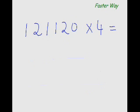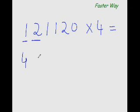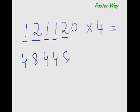Let's see more examples. What is 121,120 times 4? From left to right, multiply each digit by 4: 1×4 is 4, 2×4 is 8, 1×4 is 4, 1×4 is 4, 2×4 is 8, and 0×4 is 0. So the answer is 484,480.